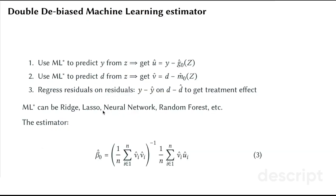So double machine learning estimator has three steps. We use machine learning to predict y from z, and we get the prediction errors. We use machine learning to predict d from z, and we get the prediction errors for the treatment. And then we regress the residuals on residuals, or prediction errors on prediction errors, to get treatment effect.